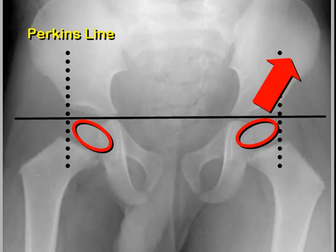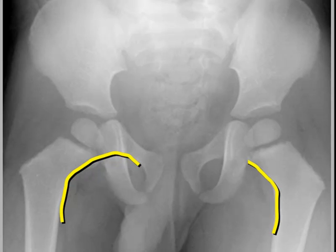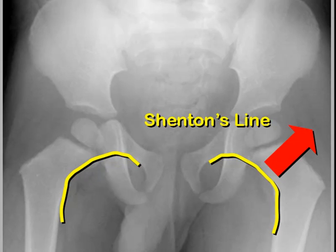When the head is dislocated, it moves superiorly and laterally. Another measurement is a line drawn from the inferior aspect of the femoral neck through the inferior border of the obturator foramen, called Shenton's line. It should form a smooth curve, and when the hip is dislocated, Shenton's line is disrupted because the femoral shaft moves outward and upward.